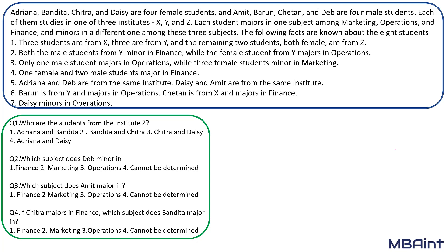Welcome, let's look into an easy to moderate set from CAT 2018. Arina, Bandita, Chitra and Daisy are four female students. Amit, Barun, Chetan, and Deb are four male students. So we know who are females and who are males.